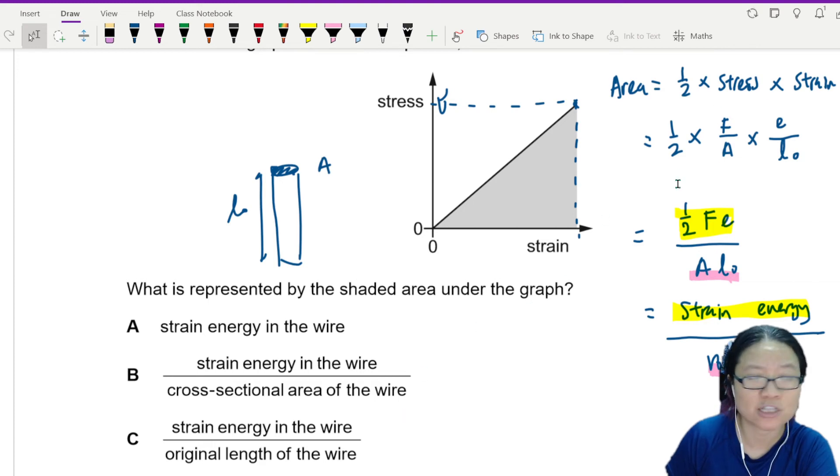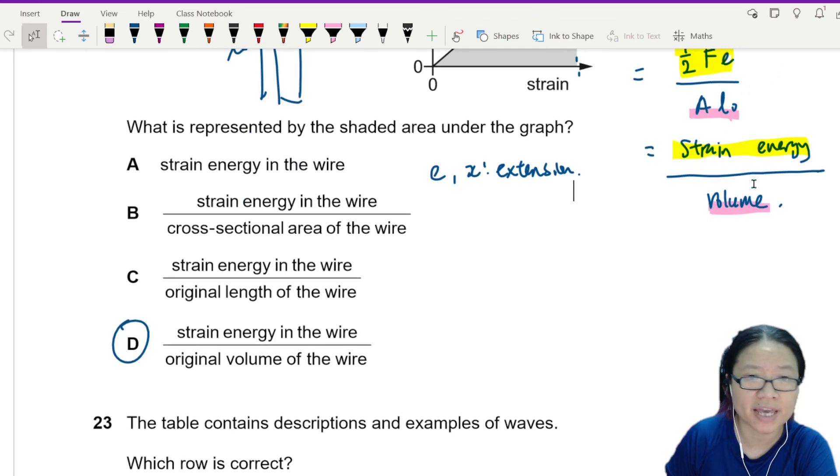Just start with the equation to represent the area. Try to match it with the options A, B, C, and D. I saw strain energy, I saw half Fe, so this part is strain energy. E or x here is extension. Then I compared the equations and found that AL is volume. That's why the answer is D.